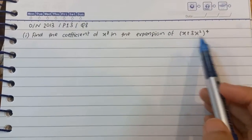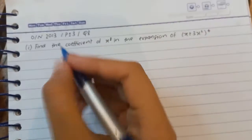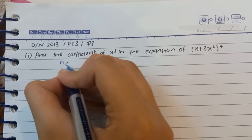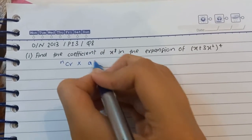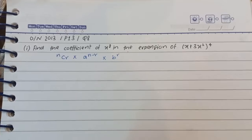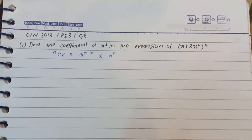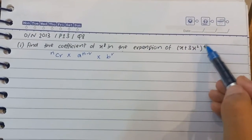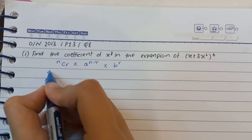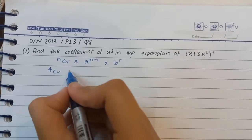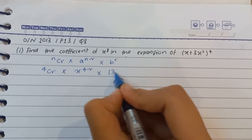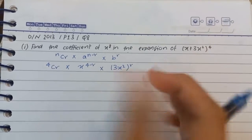We are going to use the nCr formula. The formula is: nCr into a raised to the power n minus r, into b raised to the power r. Here, n is the power over the bracket, a is the first term, and b is the second term. So I'm going to write it as 4Cr into x raised to the power 4 minus r, into (3x²) raised to the power r.